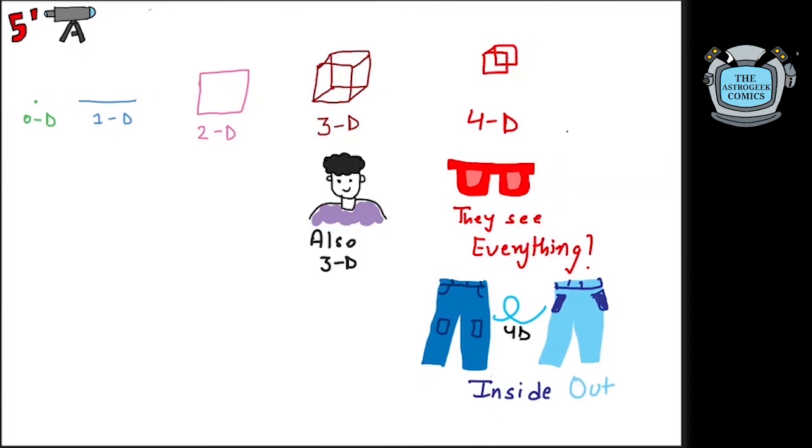In this world, a 4D square, also called a tesseract, would be something created by stacking cubes one inside the other and so on. A figure bounded by cubes.